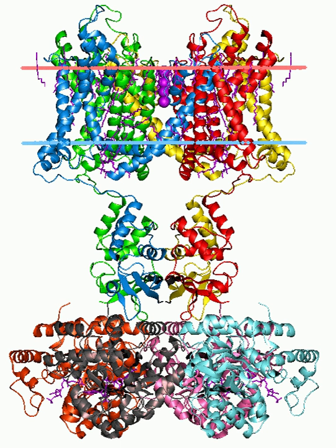Nicotinic receptors bind the acetylcholine neurotransmitter to produce non-selective cation channel flow that generates excitatory postsynaptic responses. Receptor activity, which can be influenced by nicotine consumption, produces feelings of euphoria, relaxation, and inevitably addiction at high levels.